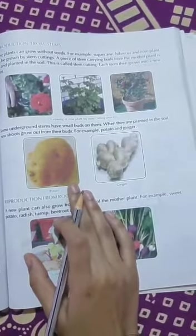Second one is reproduction from roots. Those plants which reproduce from the roots. Examples: sweet potato, radish, turnip, beetroot and dahlia.